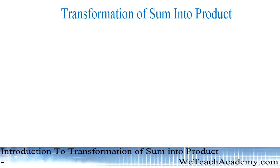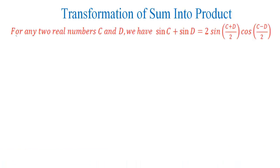Hey guys, welcome to We Teach Academy. In this presentation we are going to deal with transformations of sum into product. Let us discuss this concept by proving a formula. For any two real numbers c and d, we have the formula: sine c plus sine d is equal to 2 sine((c plus d) divided by 2) into cos((c minus d) divided by 2).